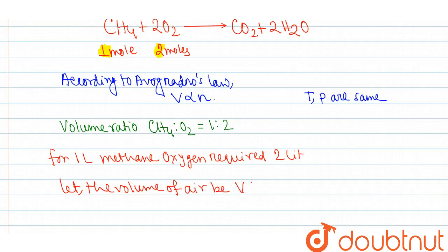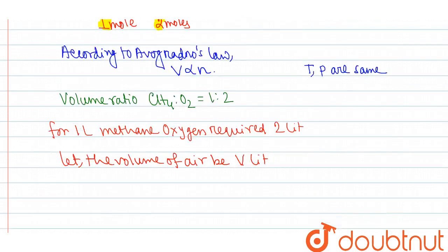be V liter. So 20% of the air is oxygen, so we can say that V × 20/100, so that is our required oxygen that is 2 liter.